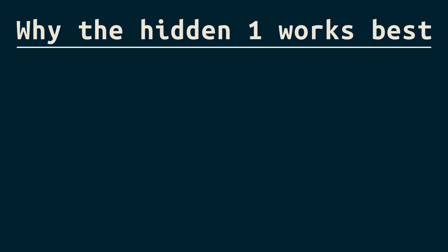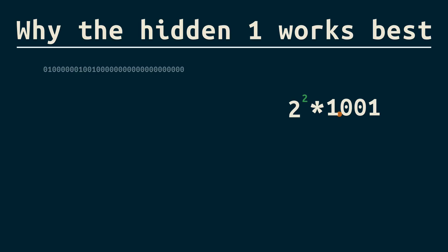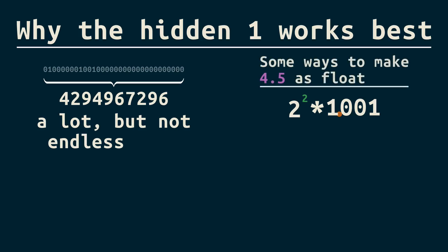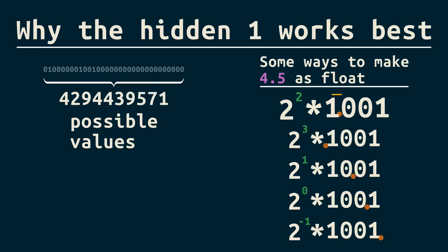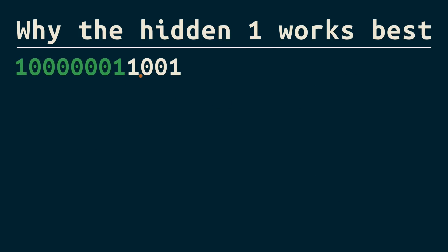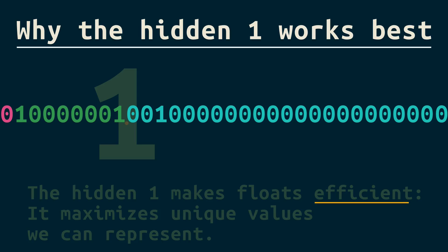Efficiency. To see why the hidden 1 is an efficient choice, let's look at how we might write 4.5 as a binary number times a power of 2. Wouldn't this also be equal to 4.5, or this, or plenty of others? Here's the thing: we only get 32 bits, giving us around 4 billion possible numbers — a lot, but not endless. Aren't we wasting some of those possibilities if we can use more than one combination to represent a single decimal number? We stop the waste by requiring a single 1 to be right before the point. Now, for any given decimal, there's only one available representation. And if there's always a 1 here, do we need to use up a bit to store it? We don't — that frees up an extra bit to use. So that's how the hidden 1 makes floats more efficient.